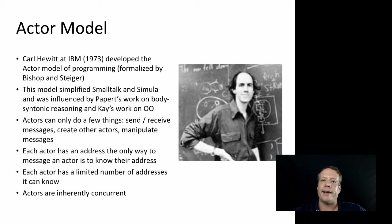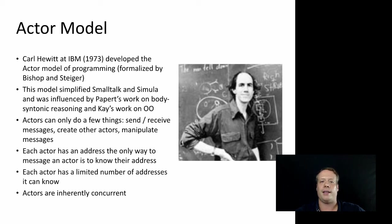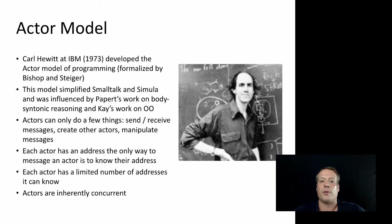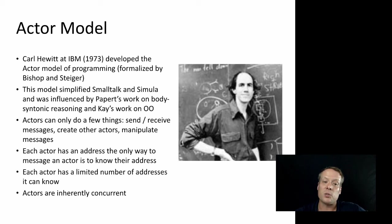Moving beyond Smalltalk was the work by Carl Hewitt at MIT in 1973, when he developed the actor model of programming, which was formalized in many ways by Bishop and Steger. This model simplified the Smalltalk framework into a more streamlined approach for manipulating objects within a computational framework. It turns out that Carl was very much influenced by Seymour Papert's work on body-syntonic reasoning and Kay's work on object-oriented programming to develop his actor model.